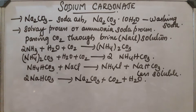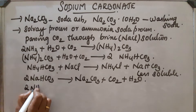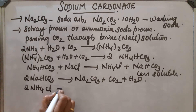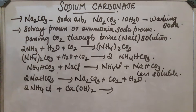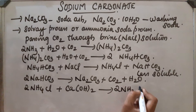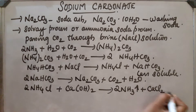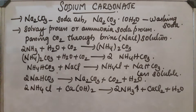The filtrate containing ammonium chloride is mixed with calcium hydroxide and heated, which allows ammonia to be recovered and the process repeated. During this step, calcium chloride is obtained as a byproduct, along with water. The reaction: NH4Cl + Ca(OH)2 → ammonia gas + CaCl2 + H2O.